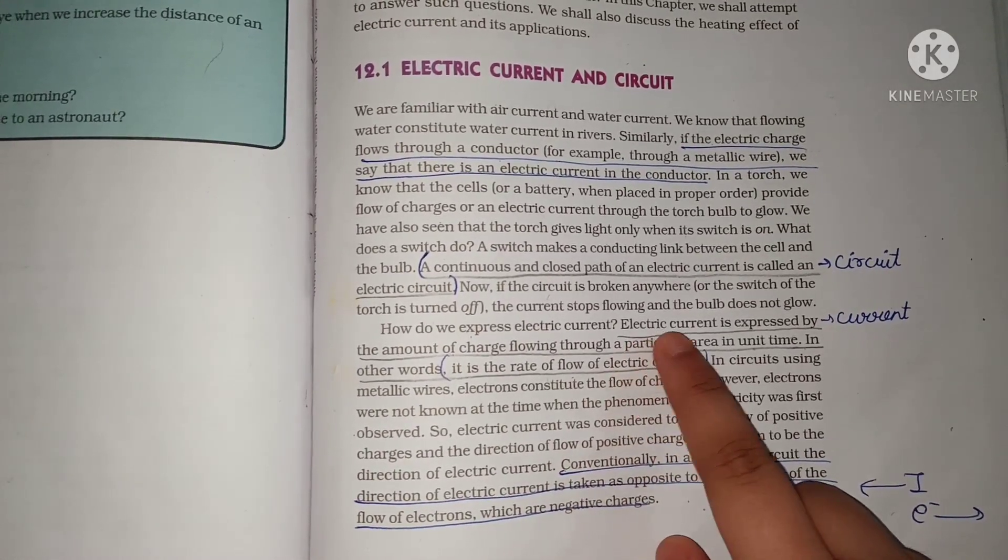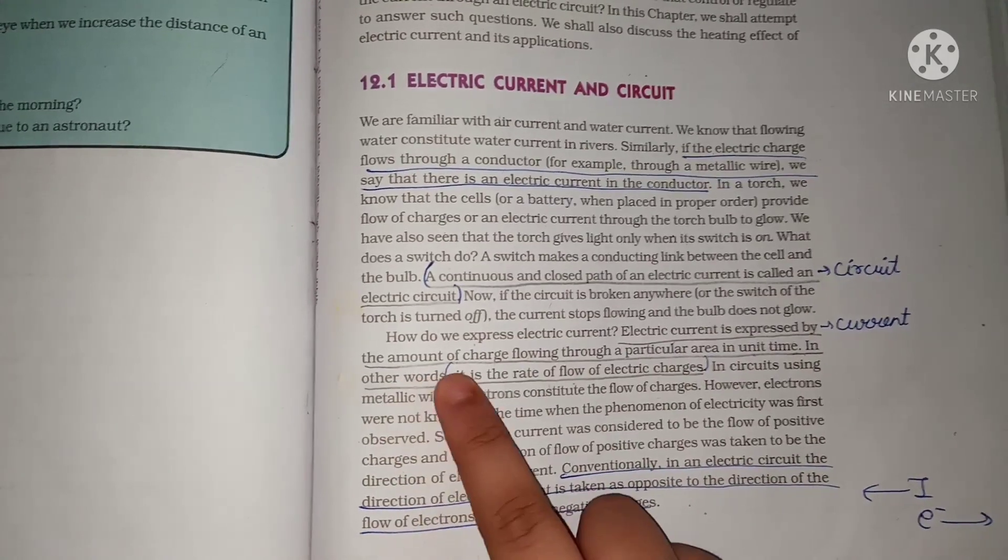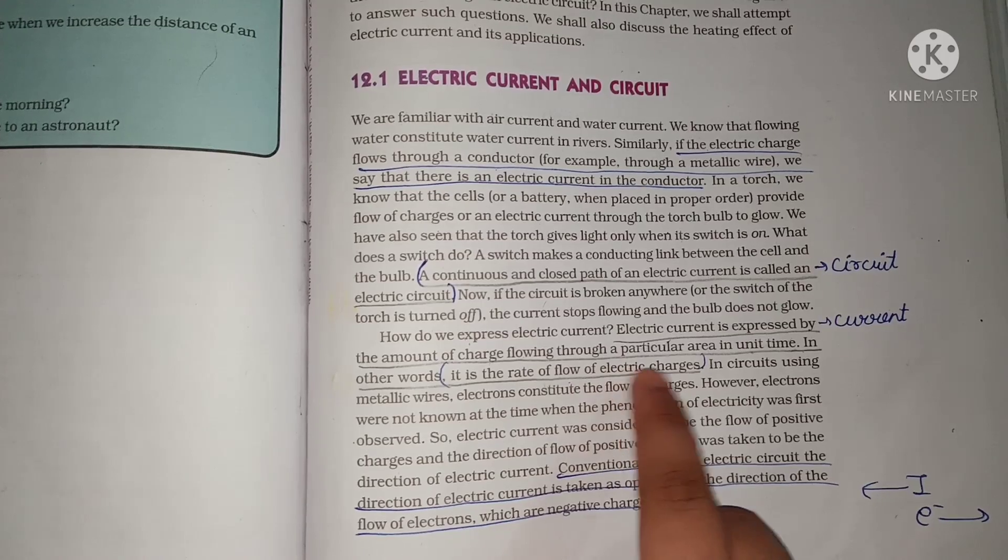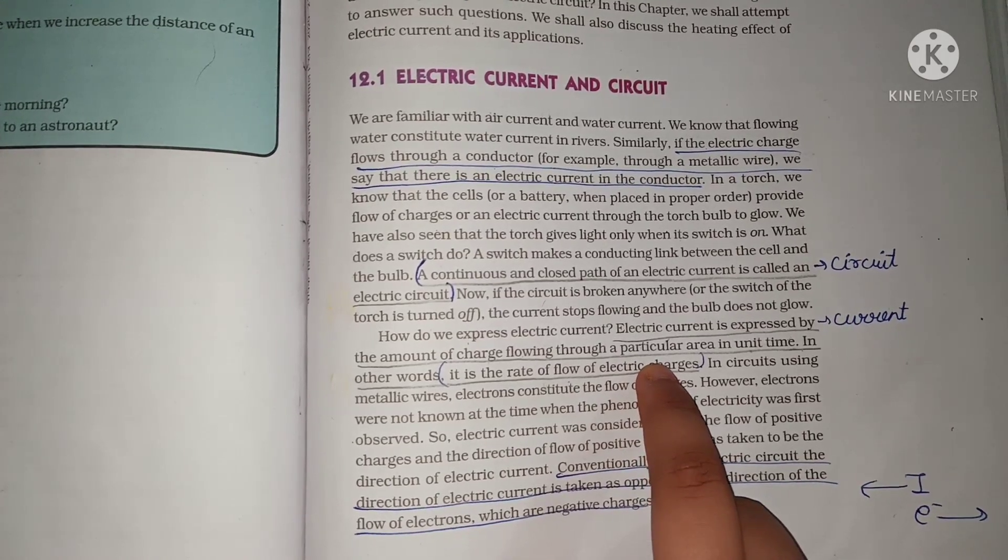So, electric current kya hota hai? Electric current is expressed by the amount of charge flowing through a particular area in unit time. In other words, it is a rate of flow of electric charges. So, this was the definition of electric current.